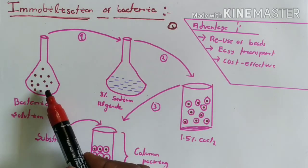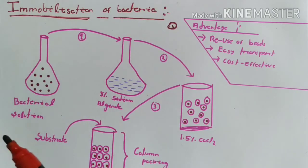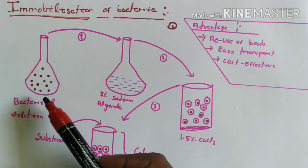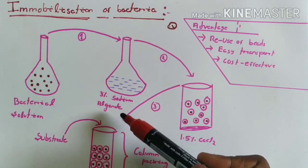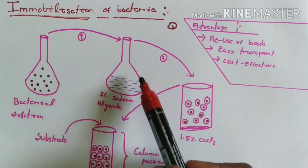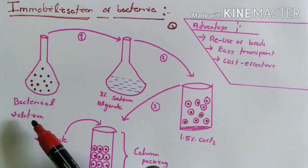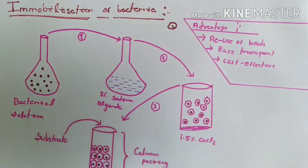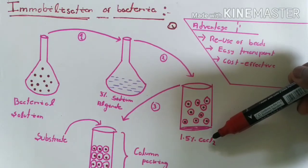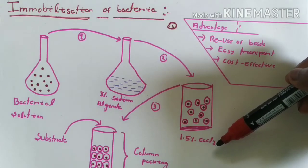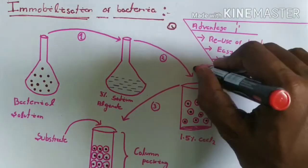The technique behind the immobilization is as follows: First, we have to take the bacterial solution, the liquid bacterial solution. We have to add the bacterial solution into three percent sodium alginate. After this, the mixture of three percent sodium alginate and bacterial solution is taken to a container.